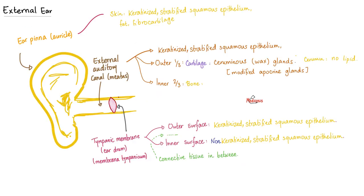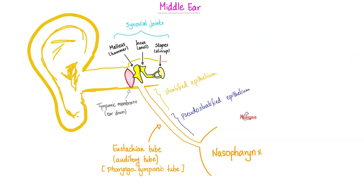The external ear is made of the auricle, or the ear pinna, which collects sound waves. Then we have the external auditory canal, or meatus. Then your eardrum, or tympanic membrane, or membrana tympanica. After that, we have the middle ear, with the famous three bony ossicles, and the Eustachian tube, which connects it to the nasopharynx.